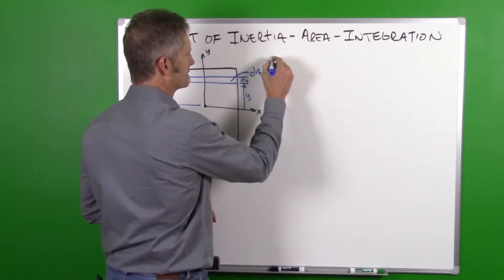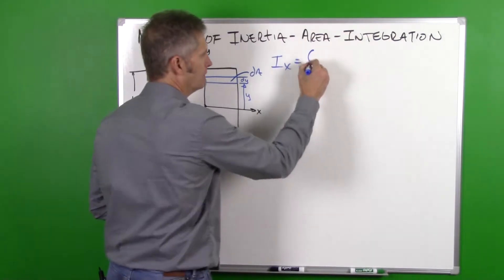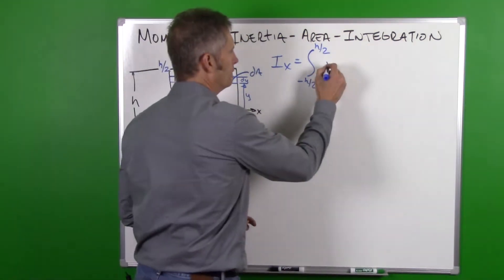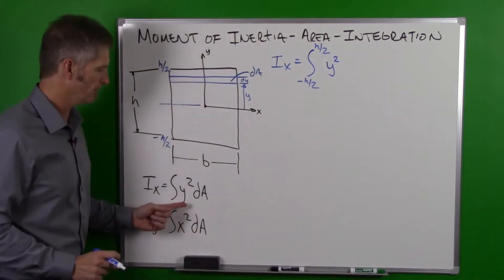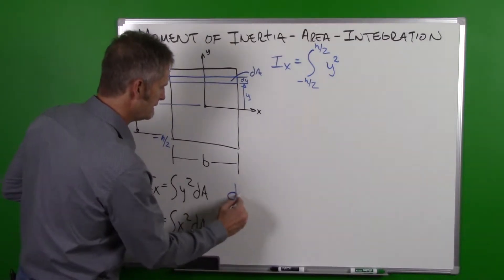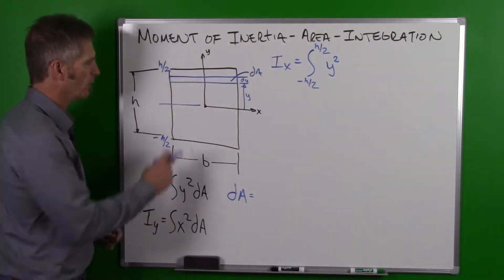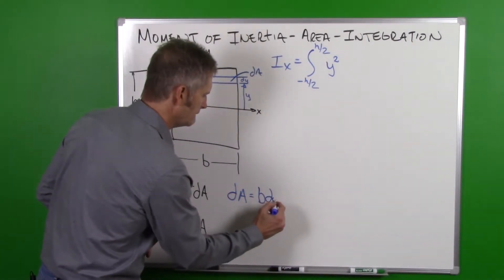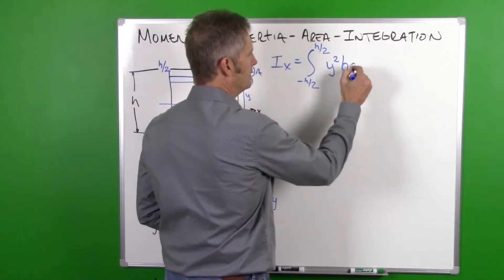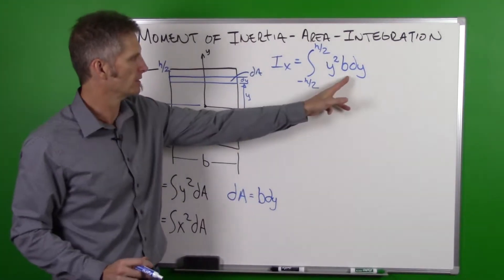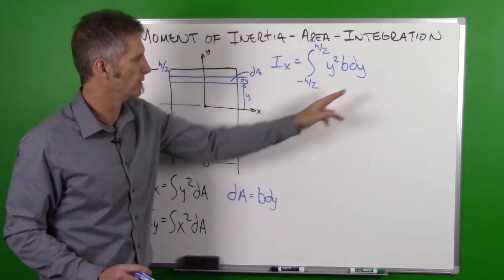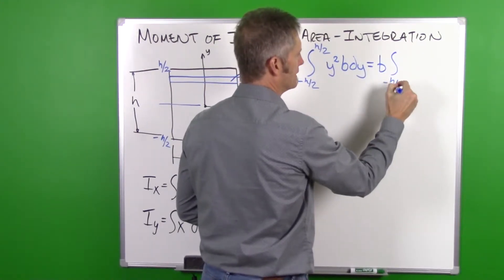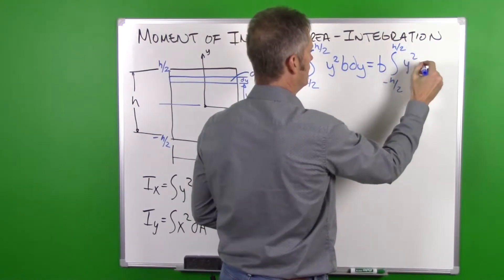Ix is going to be equal to the integral from −h/2 to h/2 of y² dA. Our dA is equal to the width times the height: the width is b and the height is dY, so dA = b·dY. Substituting in, we have the integral from −h/2 to h/2 of y²·b·dY. Since b is a constant we can pull it out: b times the integral from −h/2 to h/2 of y² dY.